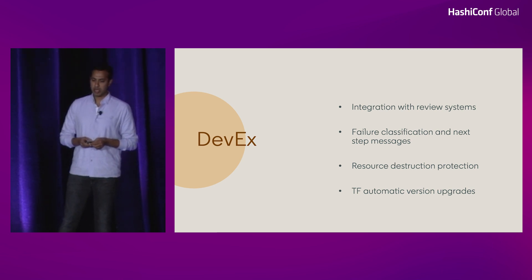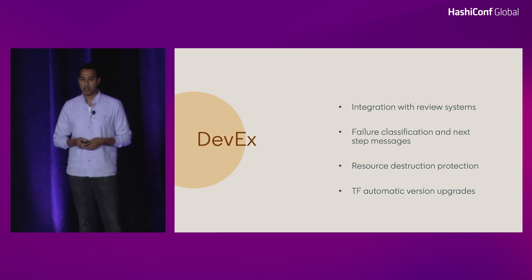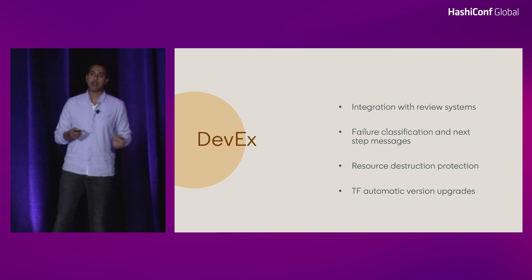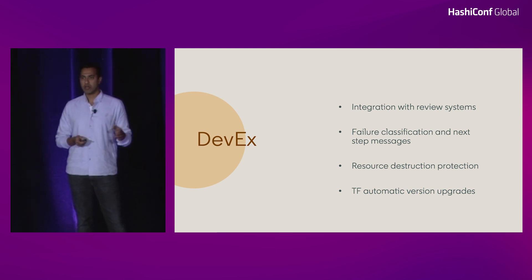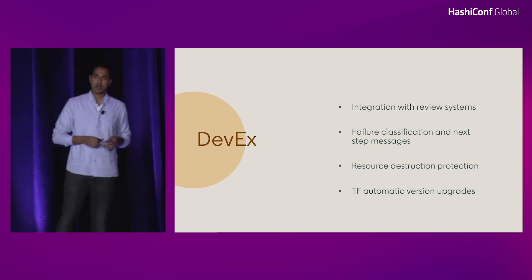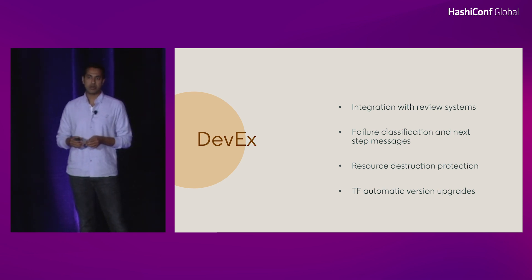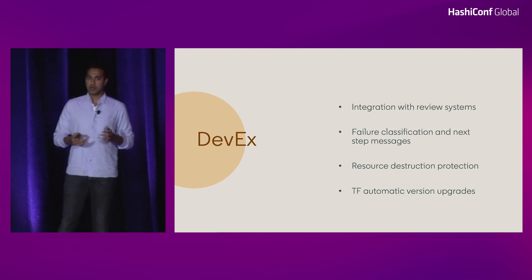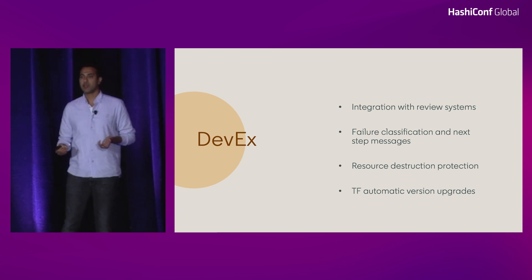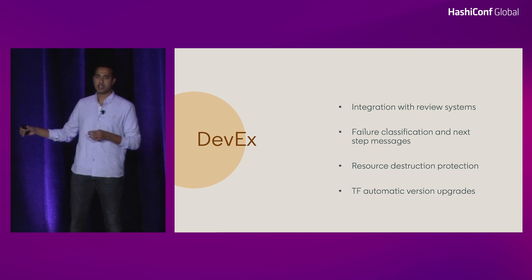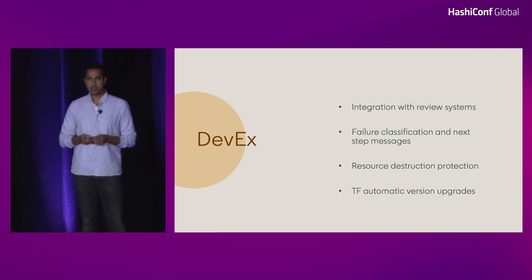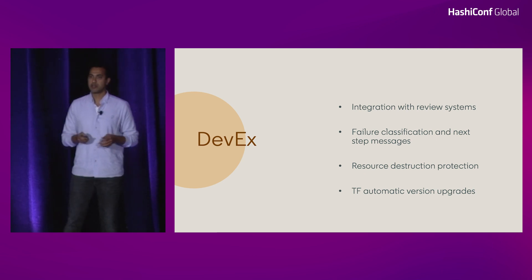We also handled automatic version upgrades, even through breaking changes, even when IAC code changes were required. Going from version 0.12.20 all the way to 1.2, we had users at various versions. To consolidate everyone onto a single version with minimal pain, we performed the migration automatically — updating state files and IAC files to capture any required changes.